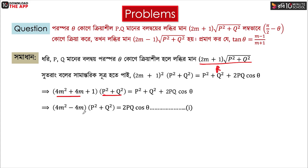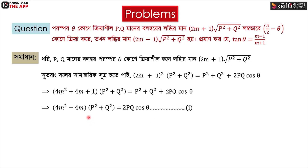So we have to add this step to 4m square plus 4m plus 1. This step is our first step to p square plus q square. If we give p square plus q square, we will add 4m square plus 4m, and we will add 1 to p square plus q square. If we add 8 times, we will add p square plus q square. If we add p square plus q square, we will add these two equations and finally develop this equation.